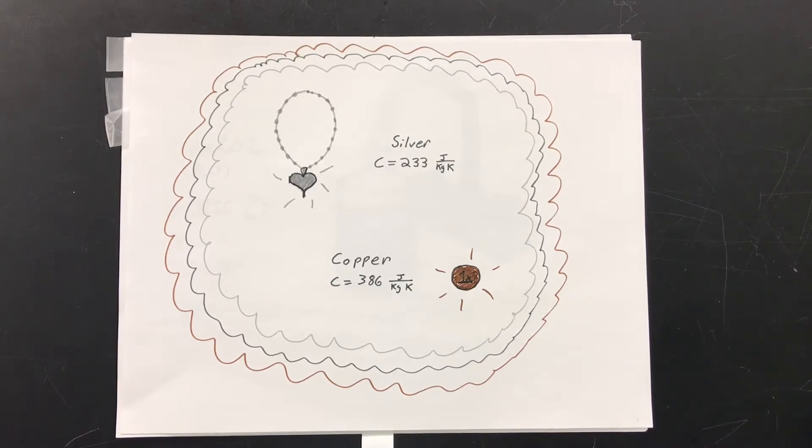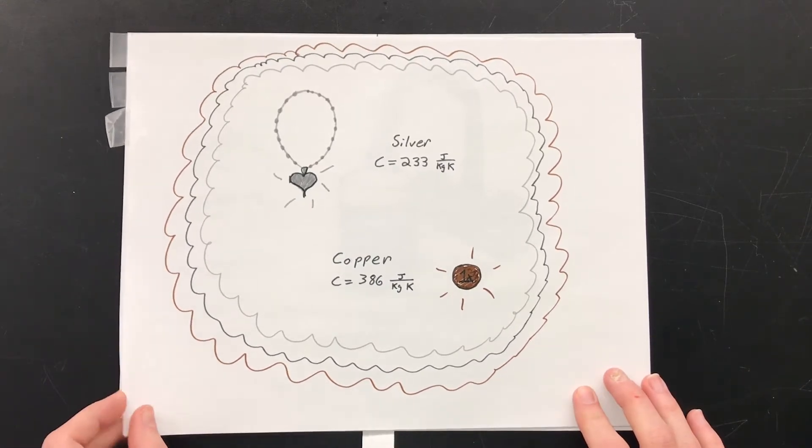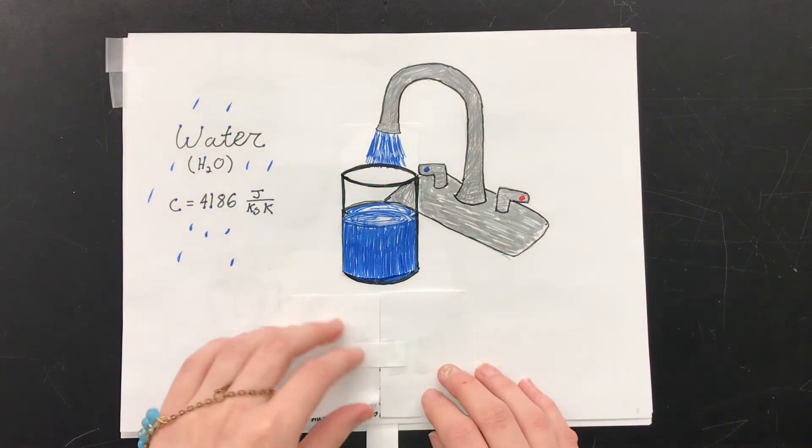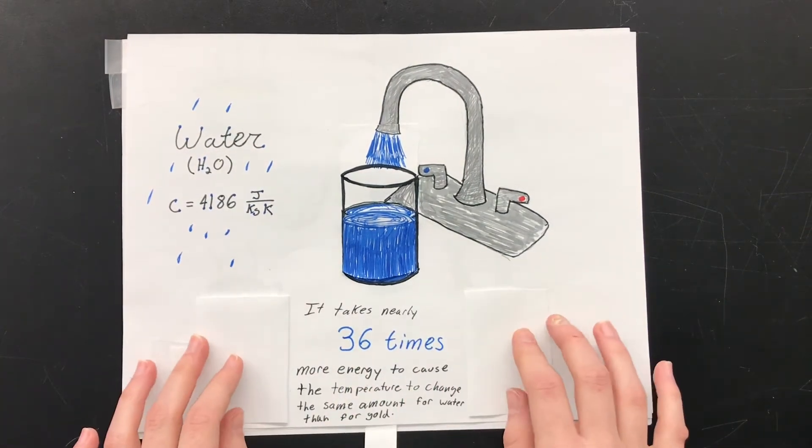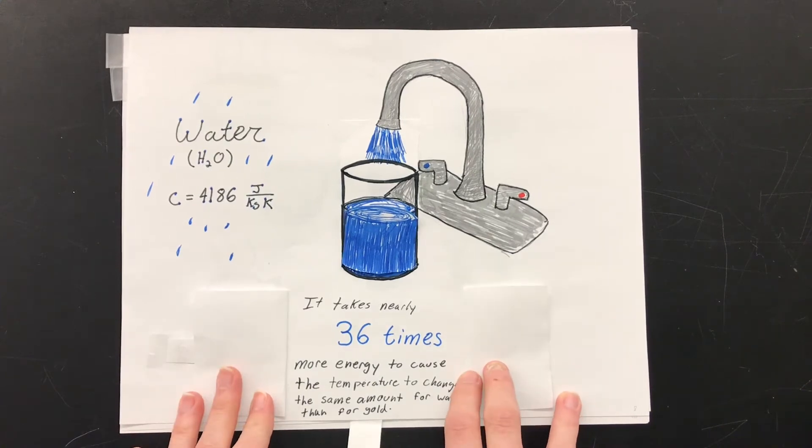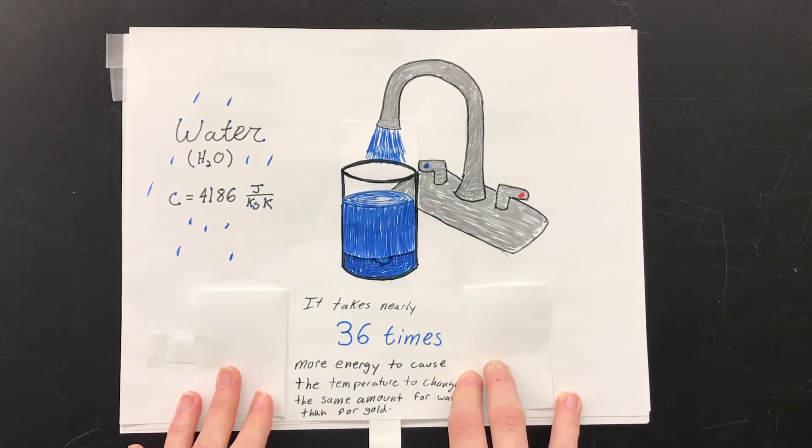Now these numbers might seem a little large to you. However, they're actually pretty small amounts of energy compared to what it takes to raise the temperature of other substances. This is especially evident when compared to water, which has the enormous specific heat capacity of 4,186 joules per kilogram Kelvin. That is nearly 36 times higher than the heat capacity of gold. So it takes 4,186 joules of heat to raise the temperature of 1 kilogram of water by 1 degree Kelvin.